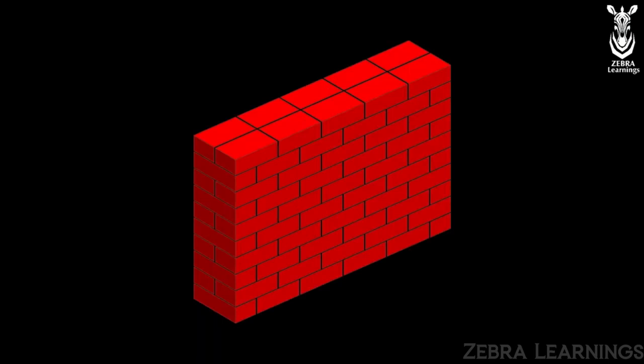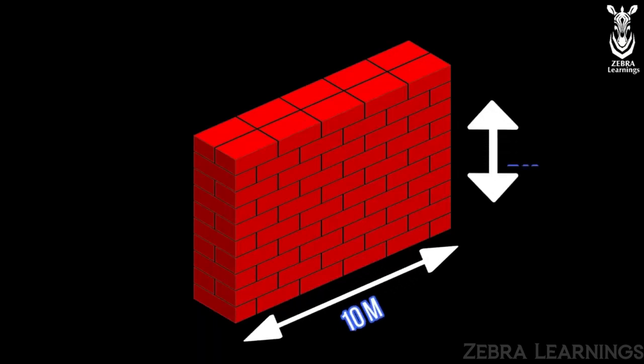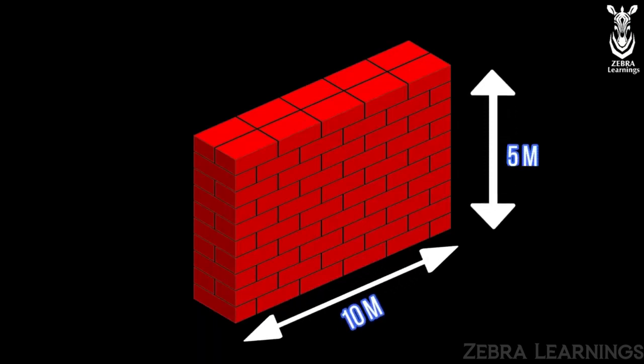For example, let us see how many bricks are required to build a wall 10 meters long, 5 meters high, and 0.2 meters wide.